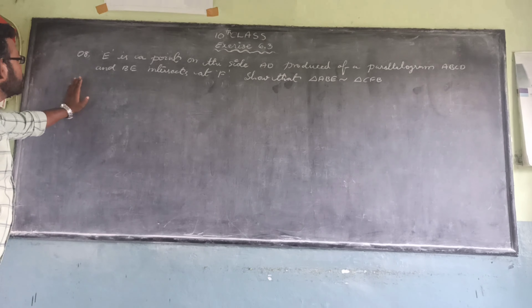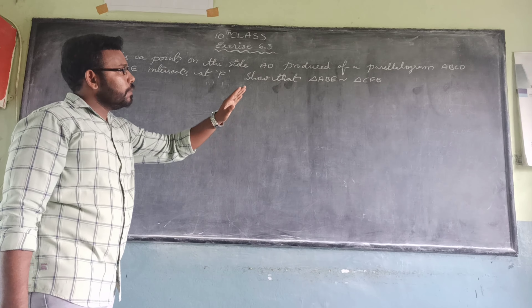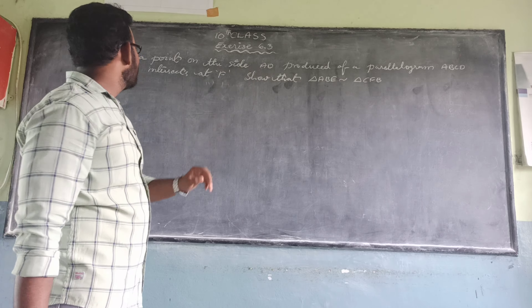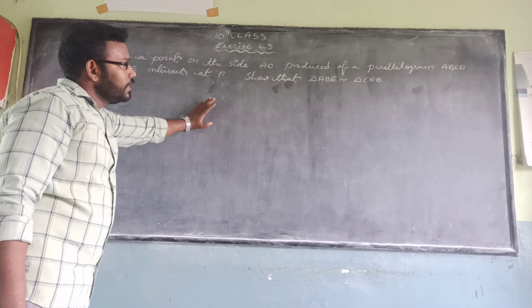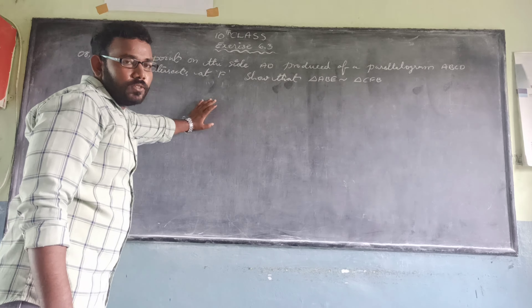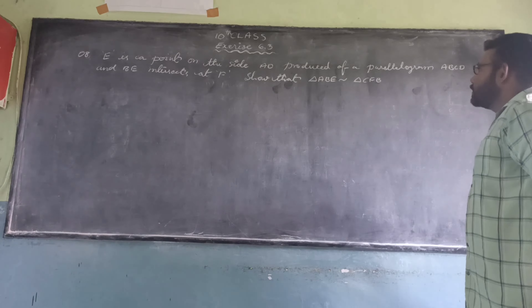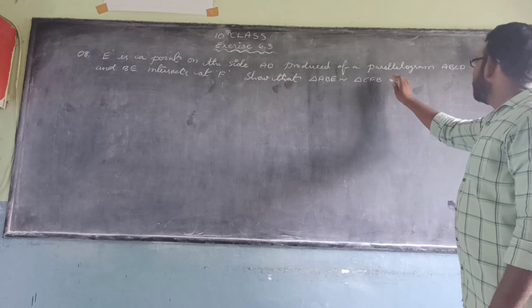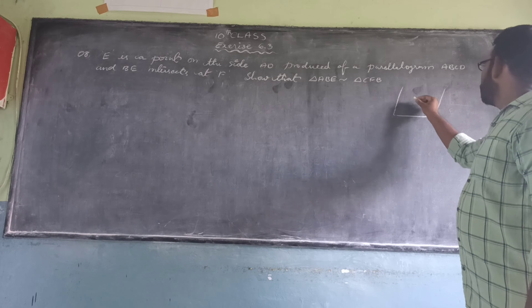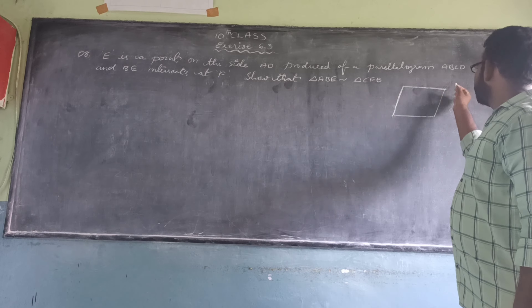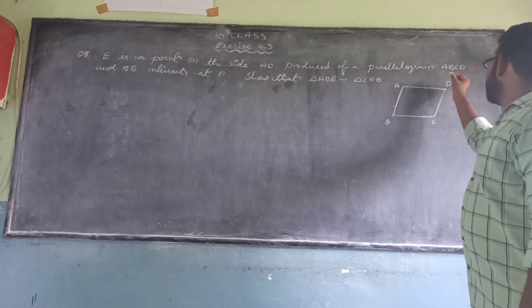The 8th question is: E is a point on the side AD produced of a parallelogram ABCD, and BE intersects CD at F. We have to show that triangle ABE is similar to triangle CFB.